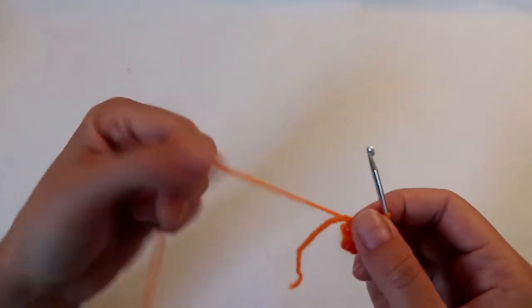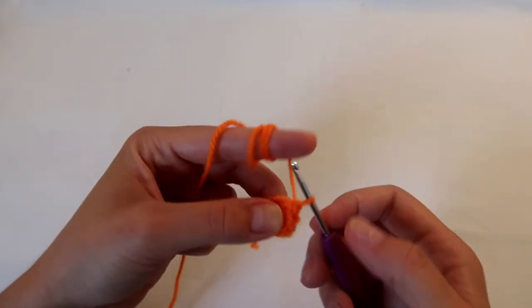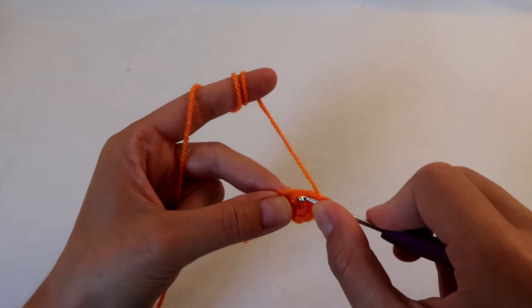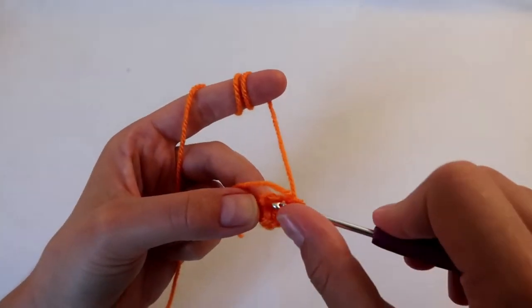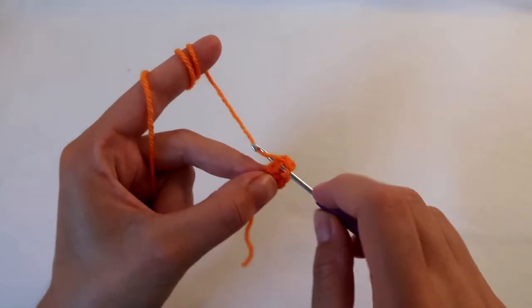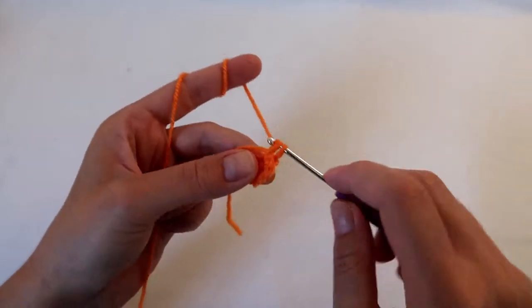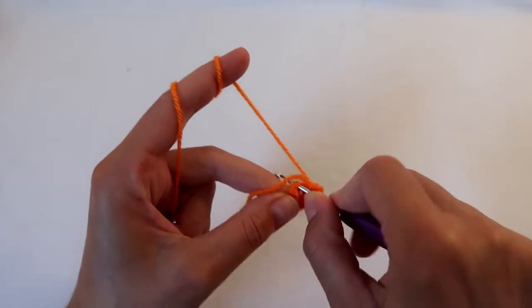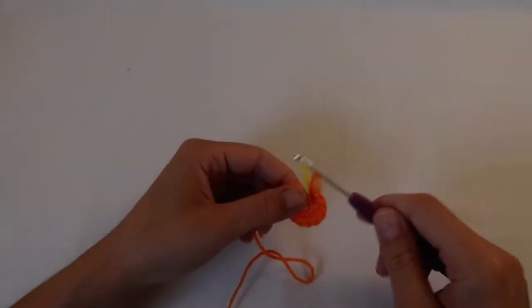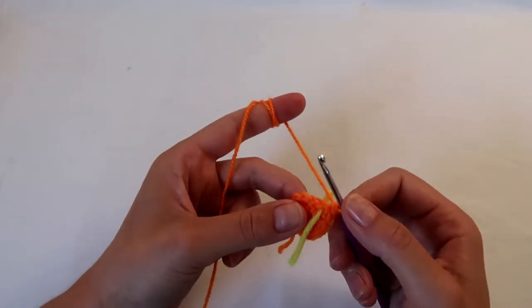Next I'm going to do 2 double crochets in each stitch. Now I'm going to do 1 double crochet followed by 2 double crochets in the next stitch.